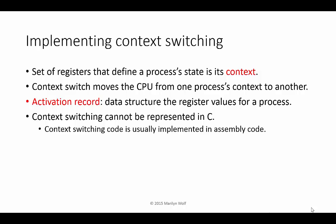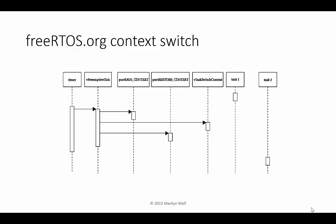We usually use assembly language to build a context switching program. This sequence diagram illustrates the basic context switching process in the FreeRTOS operating system. When the timer interrupts, it calls vPreemptiveTick. That first calls portSaveContext, which saves all the current registers. It then calls vTaskSwitchContext, which decides what to run next. And then it calls portRestoreContext to restore the registers for the new process.